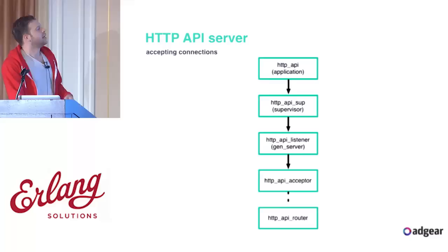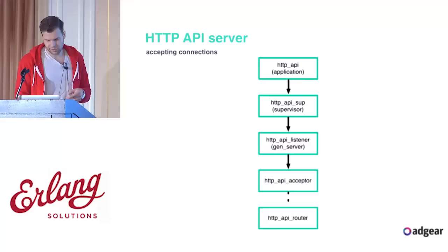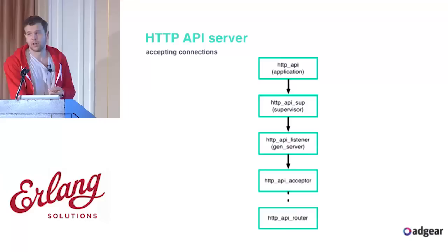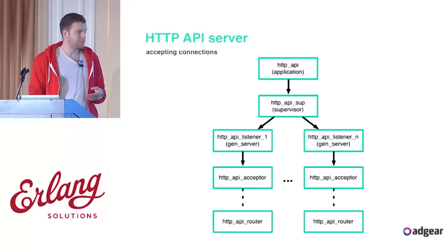In this new pattern, the listener receives the notification, the acceptor accepts, and then eventually after accepting, it becomes the router — it calls the router without spawning anything else. This works well, but obviously there's only one gen_server, so it can only accept on one core at a time. What we want is multiple listeners spawning multiple acceptors to accept multiple connections in parallel.